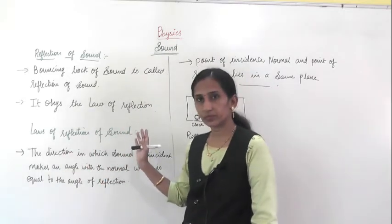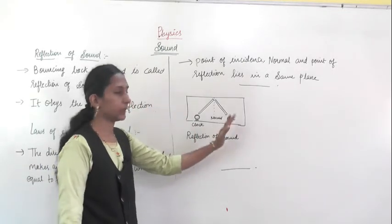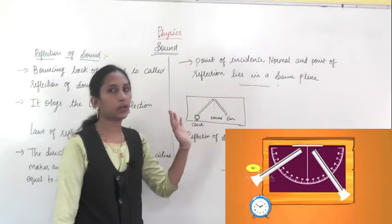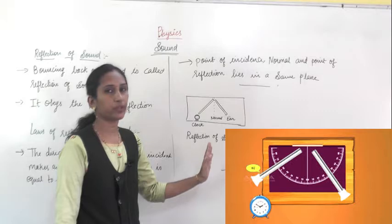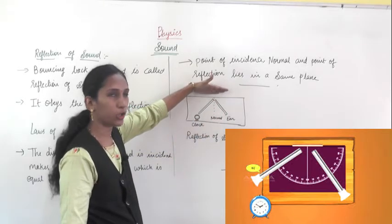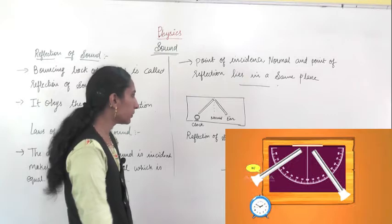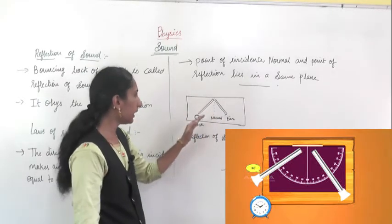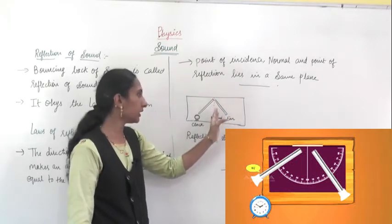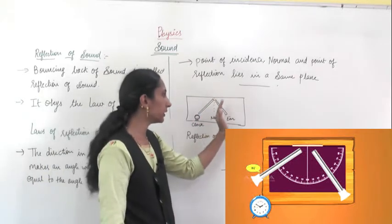Before going to the law, let me explain a small experiment. A table is taken, and on it two pipes of appropriate length are arranged. A normal line is drawn in the middle, and there is a wall nearby. The pipe is positioned so that at one end of the pipe there is a clock, and at the other end you keep your ear. You want to hear the sound of the clock through the ear.